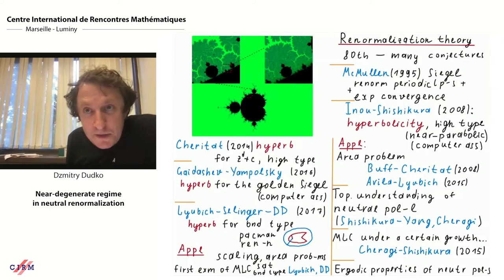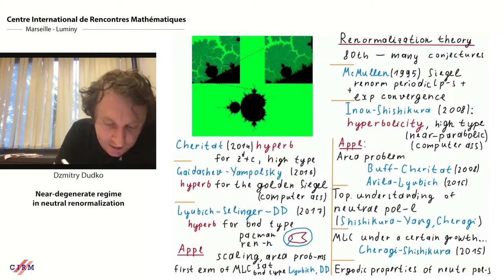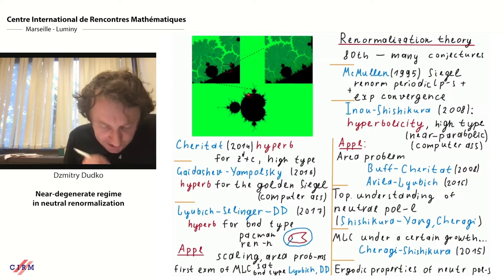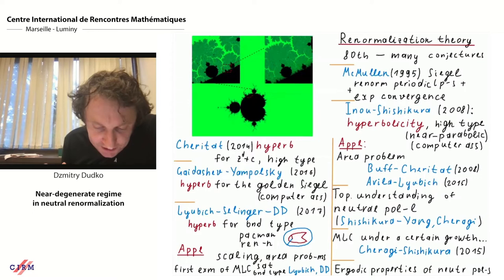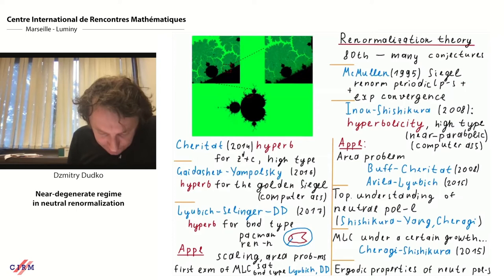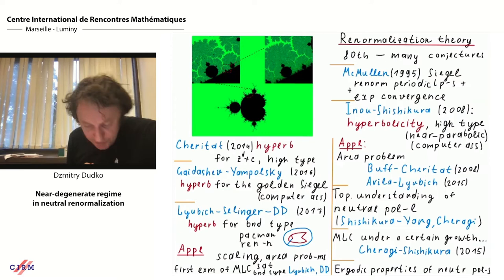Gaidashev and Yampolsky presented a computer-assisted proof for the golden mean Siegel disk. Then in joint work with Misha and Nikita, we proved hyperbolicity for bounded-type parameters using Pac-Man renormalization. Hyperbolicity means we can study nearby maps, so we understand quite well what happens with Siegel disks of periodic type. Once we have hyperbolicity we can study nearby maps, obtain applications to scaling and area problems, and constructed the first example of MLC of the satellite-bounded type.